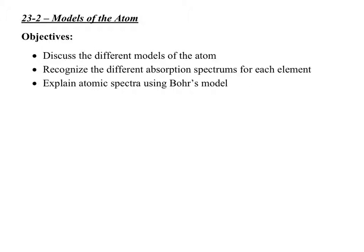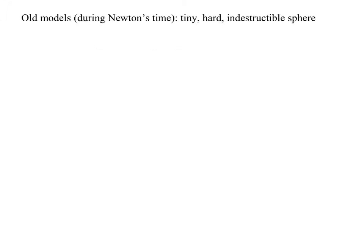We'll go through the history of the atom stage by stage, then see how it applies to fusion and fission. The first model, during Newton's time, was that the atom was the smallest, most fundamental particle. It was thought to be a tiny, indestructible sphere that could not be split.